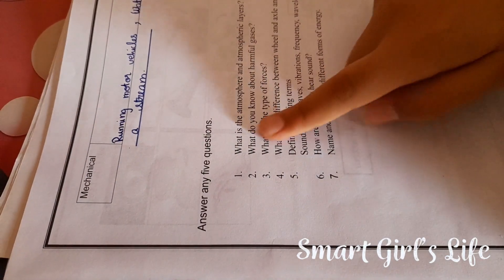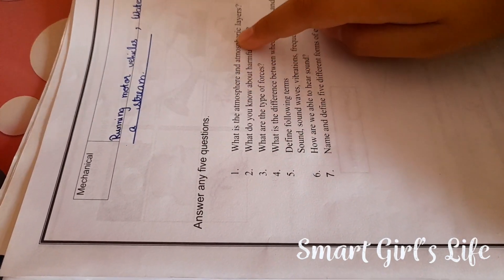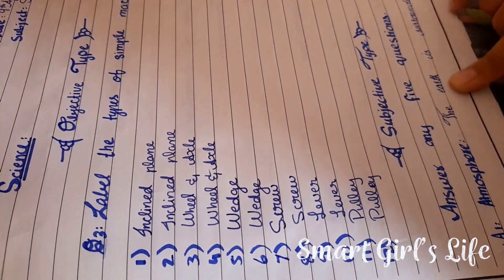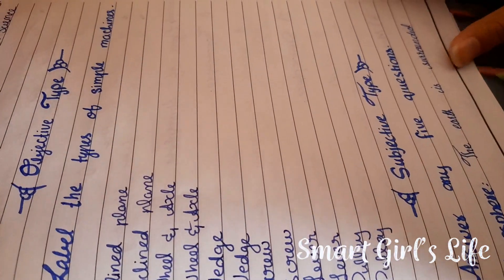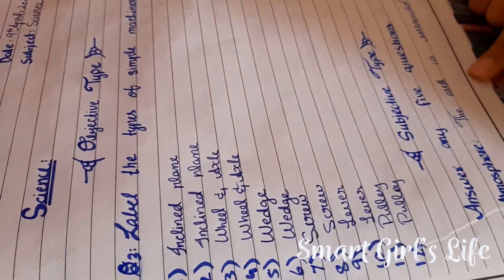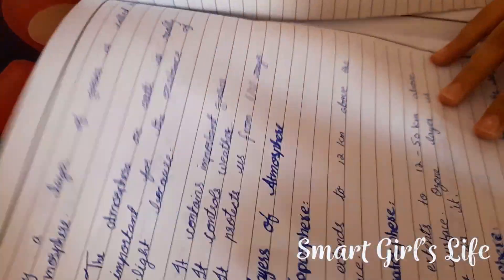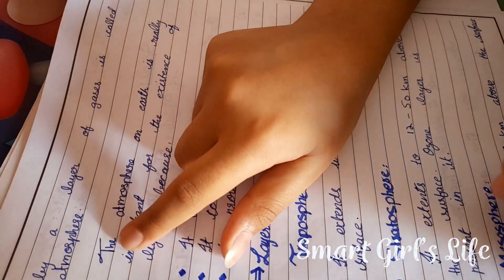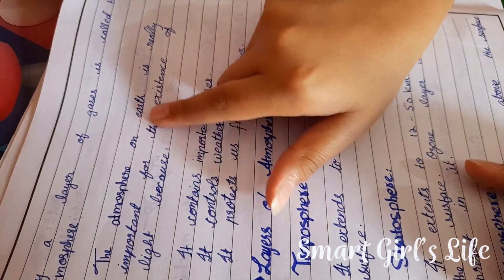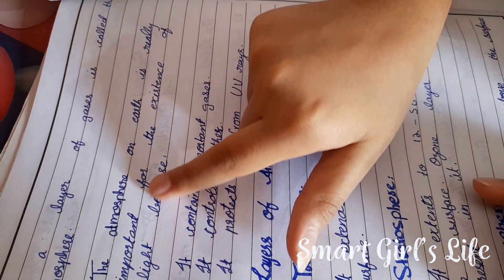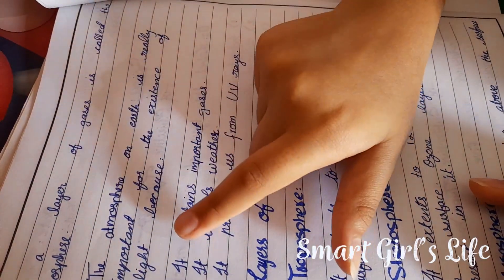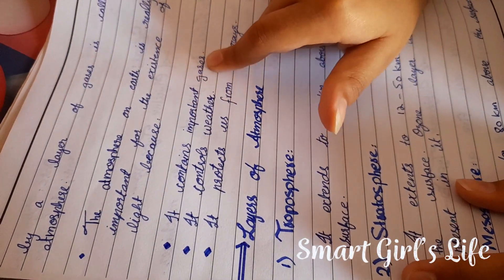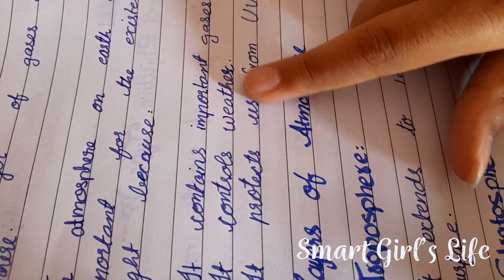Subjective type — answer any five questions. Question number one: what is the atmosphere? The earth is surrounded by a layer of gases called the atmosphere. The atmosphere on earth is really important for the existence of life because it contains important gases. It controls weather.